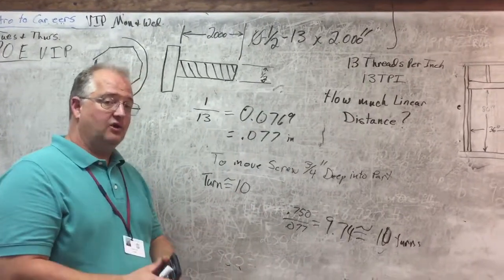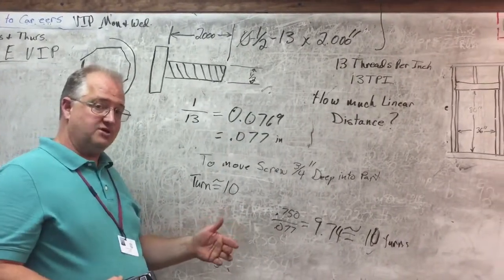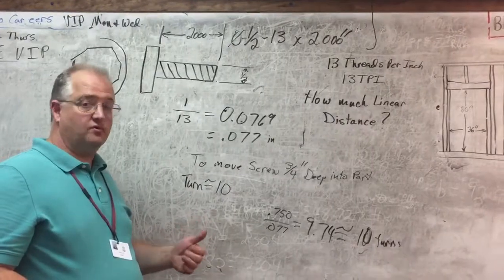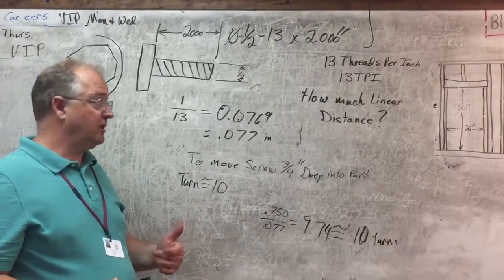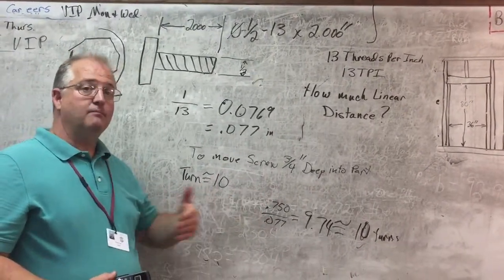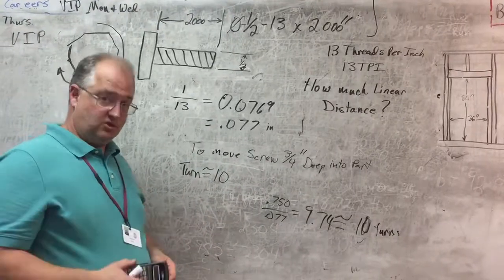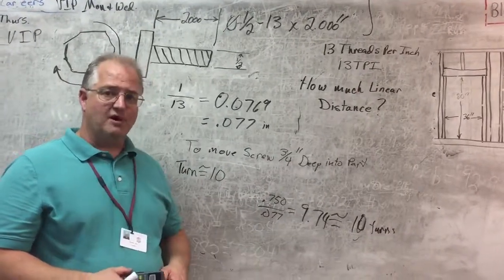And you'll see that common throughout industry and with different machines where we're using the screw. Typically it's called a ball screw to make and move linear motion with the rotational motion of the screw. Thanks for watching.